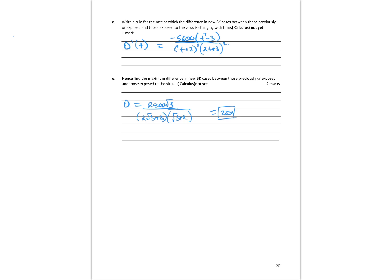This part is purely calculus. The rate is my derivative, D′(T). Type it into the CAS. For the maximum difference in new cases, solve D′(T) equal to 0 — this probably occurs at T equal to positive root 3, giving approximately 20. But again, that's the calculus component, and we're done.